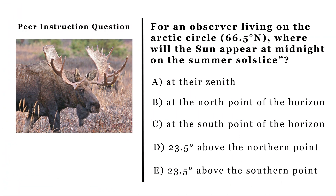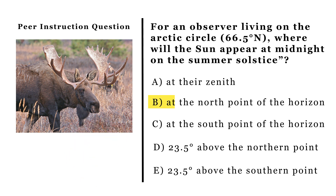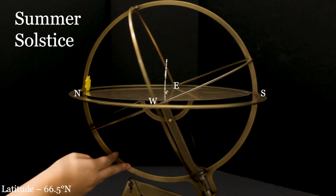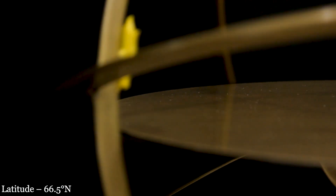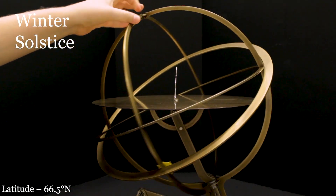Let's check your understanding of the Sun's path as seen from the Arctic Circle. Where does the Sun appear at midnight on the summer solstice? Please pause this video and answer the question. Here, on the day of the summer solstice, the Sun just barely does not set below the horizon. And on the day of the winter solstice, the Sun just barely does not rise.